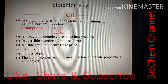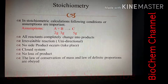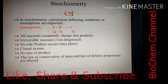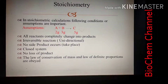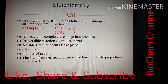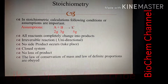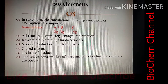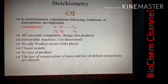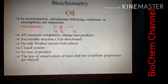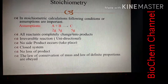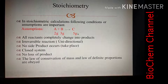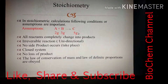The second assumption is the reaction should be irreversible — a unidirectional reaction proceeding in the forward direction only. Because reactants in the forward direction will completely convert into products. If the reaction is reversible, some of the 5 grams of product may convert back into reactants, so the full 5 grams would not remain as product.